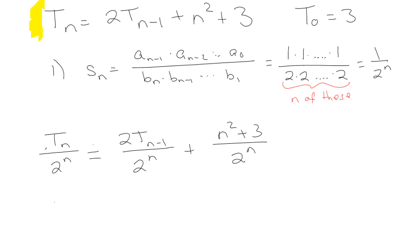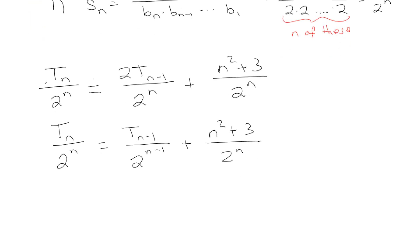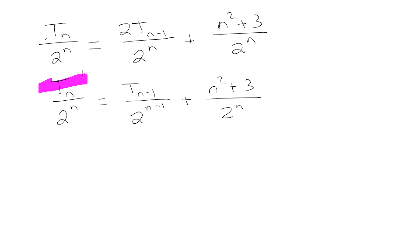All right, so if I simplify this, I've got T sub n over 2^n equals T sub n minus 1 over 2^(n-1). And that's when we get excited, right? Why are we excited? No, we're super excited, just check this out. Because basically what we have here is the same thing that we have here, except everywhere we had an n, we now have an n minus 1. Which means we can do this amazing thing.